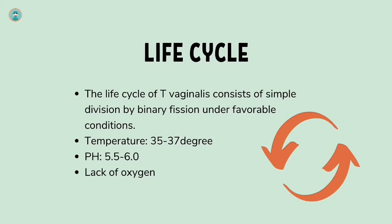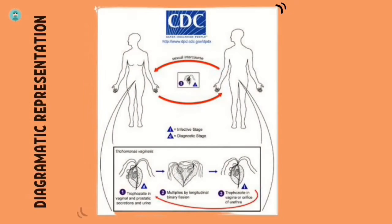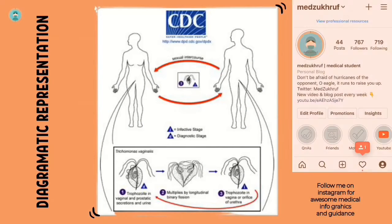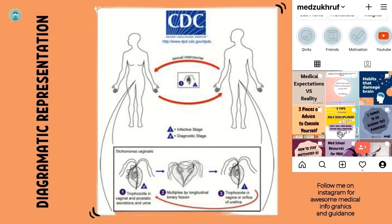The life cycle of Trichomonas vaginalis consists of simple division by binary fission under favorable conditions. These conditions include a temperature of about 35 to 37 degrees Celsius, a pH of 5.5 to 6.0, and importantly, low oxygen — meaning a lack of oxygen is required.